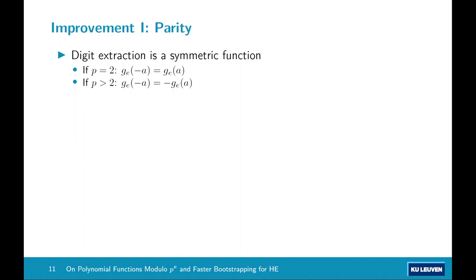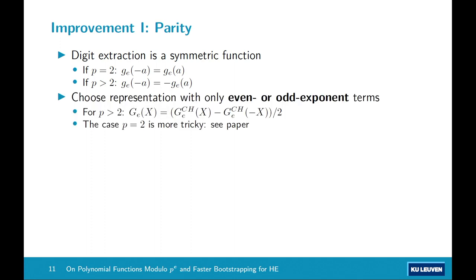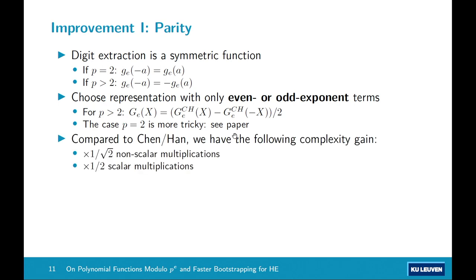Our first improvement observes that digit extraction is a symmetric function — an even function when p=2, and an odd function when p>2. This allows us to choose a representation with either only even or odd exponent terms. For example, when p>2 we can evaluate a simple formula that cancels out the even exponent terms. The case p=2 is a bit more complicated since we cannot directly divide by 2 — we refer to the paper for more details. Compared to Chen-Han, we save a factor of √2 in non-scalar multiplications and a factor of 2 in scalar multiplications.